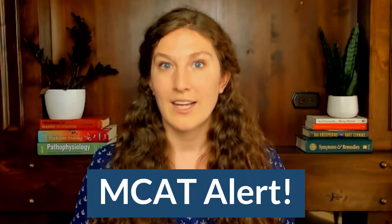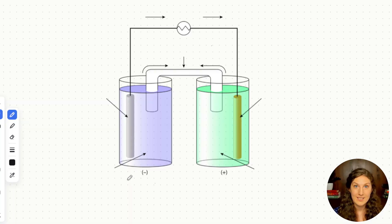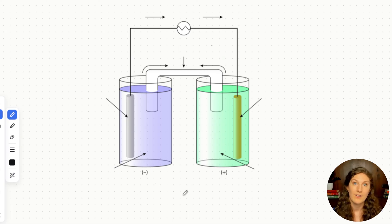The two types of electrochemical cells on the MCAT are galvanic or voltaic cells and electrolytic cells. Galvanic cells are much more likely to be tested on the MCAT, so we're going to spend more time with this type. Here we have a common schematic of what a galvanic or voltaic cell looks like, and we're going to go through the key features and functions of each part.